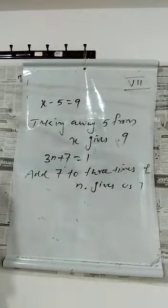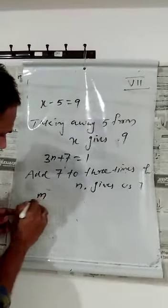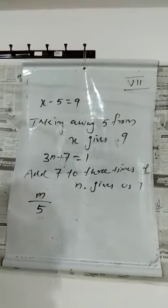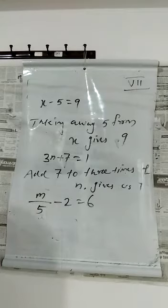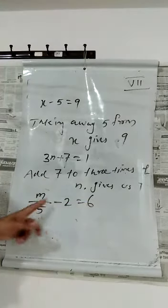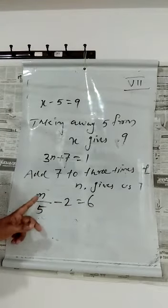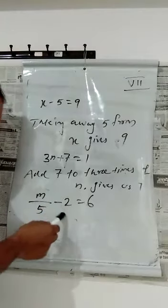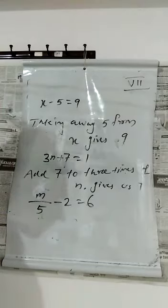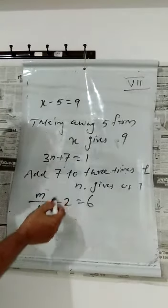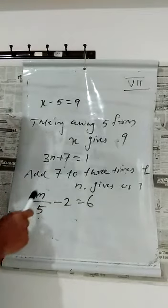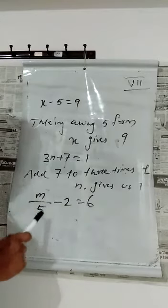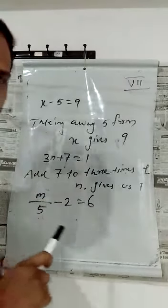One more: m divided by 5, minus 2, equal to 6. How can you write this? You get 6 when you subtract 2 from one-fifth of m. Otherwise: subtract 2 from one-fifth of m — the result is 6.